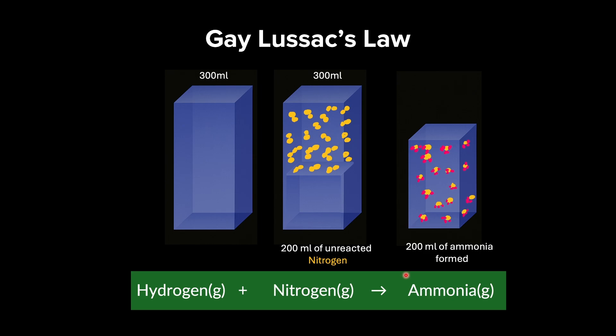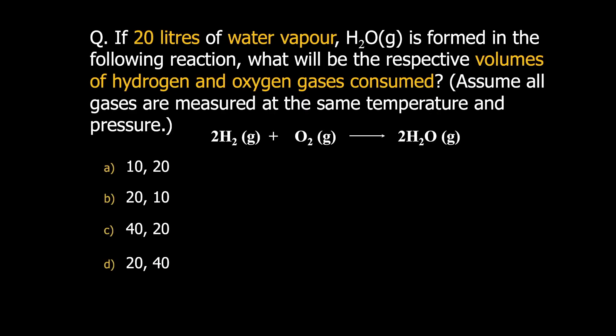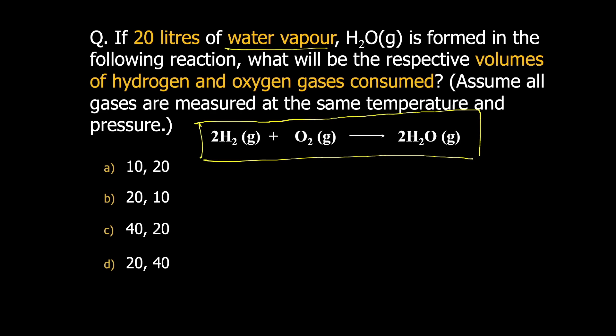Gay-Lussac's law was effectively clarified through Avogadro's work in 1811, which we shall study going ahead. But for now, to get better clarity, let's take a look at this question. The question says: if 20 litres of water vapour (H₂O gas) is formed in the following reaction, what will be the respective volumes of hydrogen and oxygen gases consumed? You can assume all gases are measured at the same temperature and pressure.